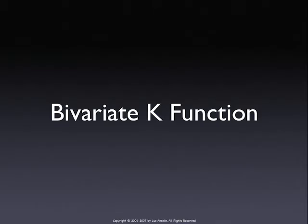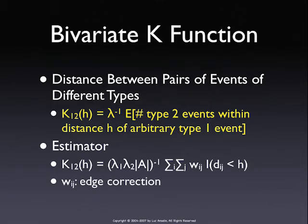The bivariate K-function looks at two point patterns and is a straightforward extension. Instead of counting the average number of events within a given distance from an event of one kind, we count the average number of events of the other kind within a given distance. So for each liquor store, we take a distance H, count how many shootings there are within that distance, and average it over all the liquor stores. That is our bivariate measure.